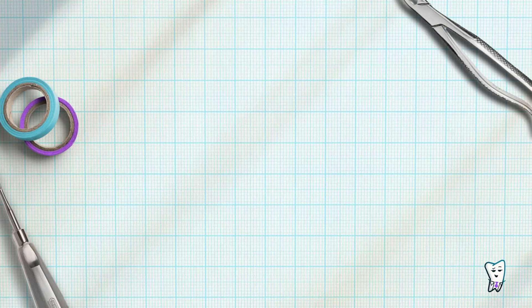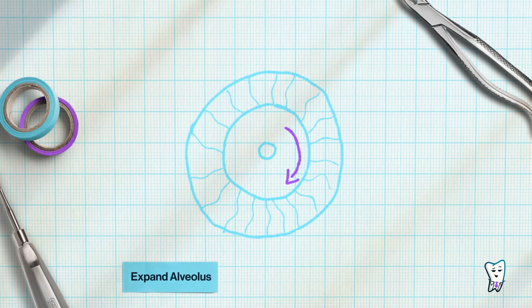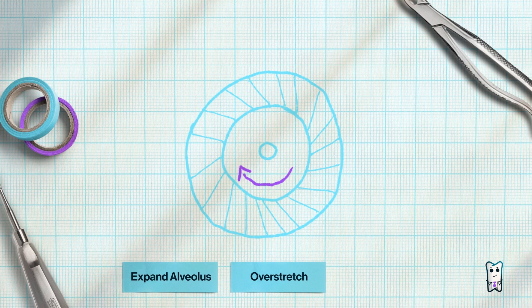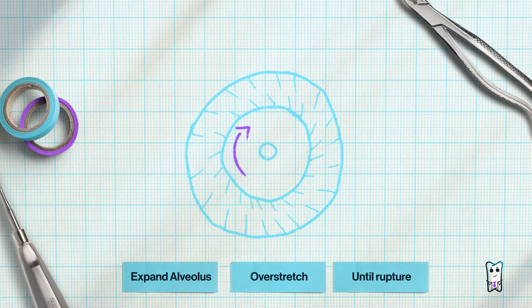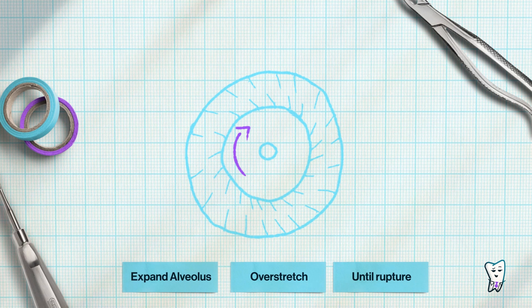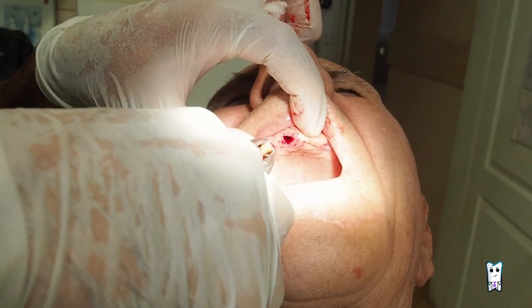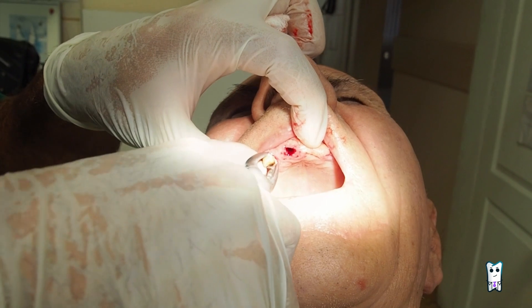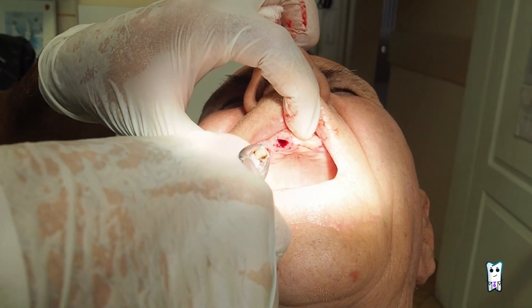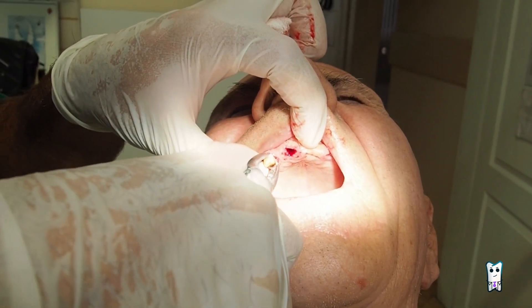What about rotational movements? The idea behind this approach of extraction is to expand the alveolus and over stretch the periodontal ligaments to the point of their rupture. Rotation can be performed on single rooted teeth with straight, conical or veil roots which are not curved. The tooth is turned slowly around its long axis until the beaks are almost in contact with the adjacent teeth.